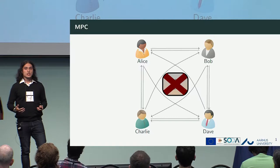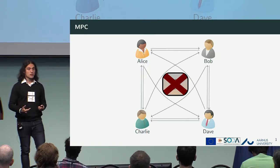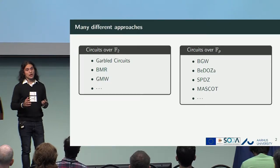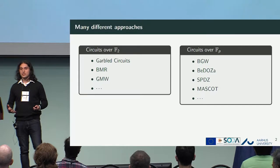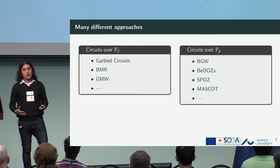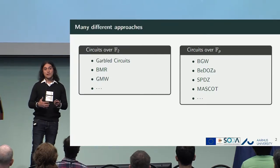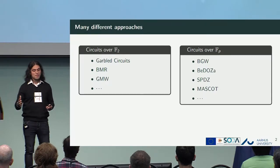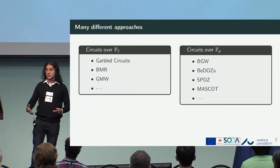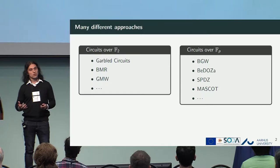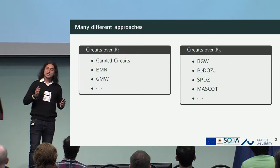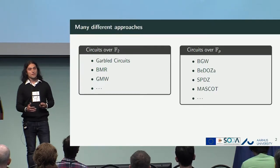There are several ways to achieve this. It all depends on how you model the circuit and what security model you want to achieve. For example, if you model the circuit as a circuit over F2 — a binary circuit — you can have different approaches like garbled circuits, or BMR, which is a generalization for multiple parties, GMW, and so on. If you want to model the circuit over a finite field of any characteristic, you can have BGW, or protocols like SPDZ, MASCOT, which work in the dishonest majority setting, or protocols that work in the honest majority setting based on Shamir's secret sharing. However, all these protocols work over fields because fields have very nice properties.